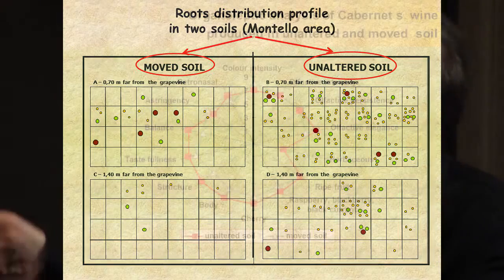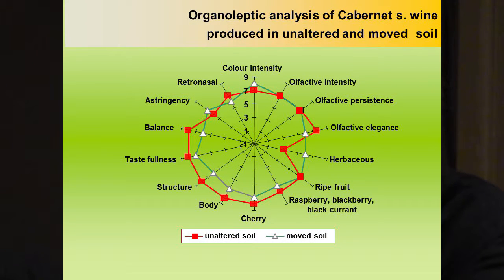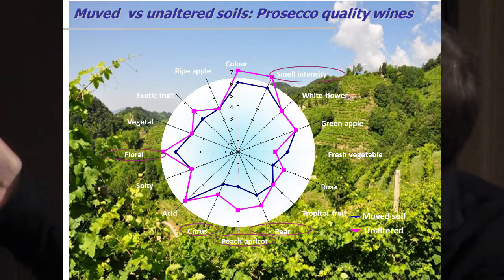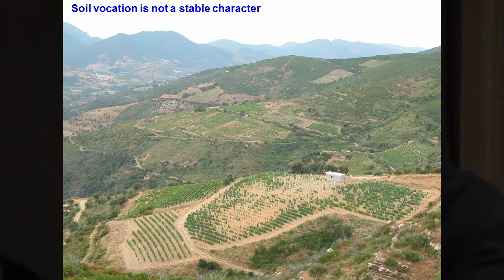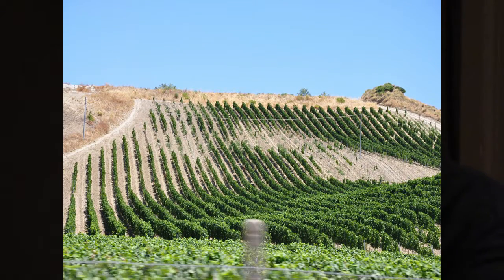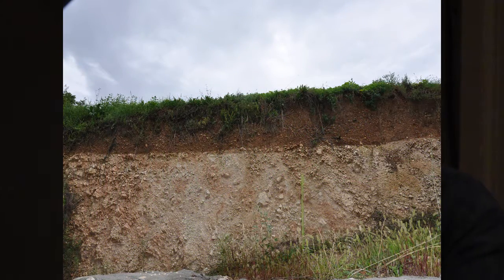Does the quality of wine relate to the operations we did when preparing the vineyard? This is Cabernet Sauvignon. It is clear that grapes obtained in unaltered soil give a better quality wine. We have the same situation for another variety — in this case, Prosecco is better from unaltered soil, showing much more floral, citrus, peach, apricot character. We have to take care of the soil before we plant the vine. The soil vocation is not a stable character. We are not renewing the soil when we move it so much — we are going down to the geological origin with no positive effect.